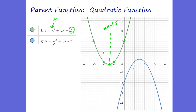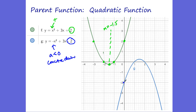As our a value is less than 0, or a negative value, you can see we have a concave down parabola. This negative 2 right here is our y-intercept, and we have a vertex and an axis of symmetry at x equals positive 1.5.